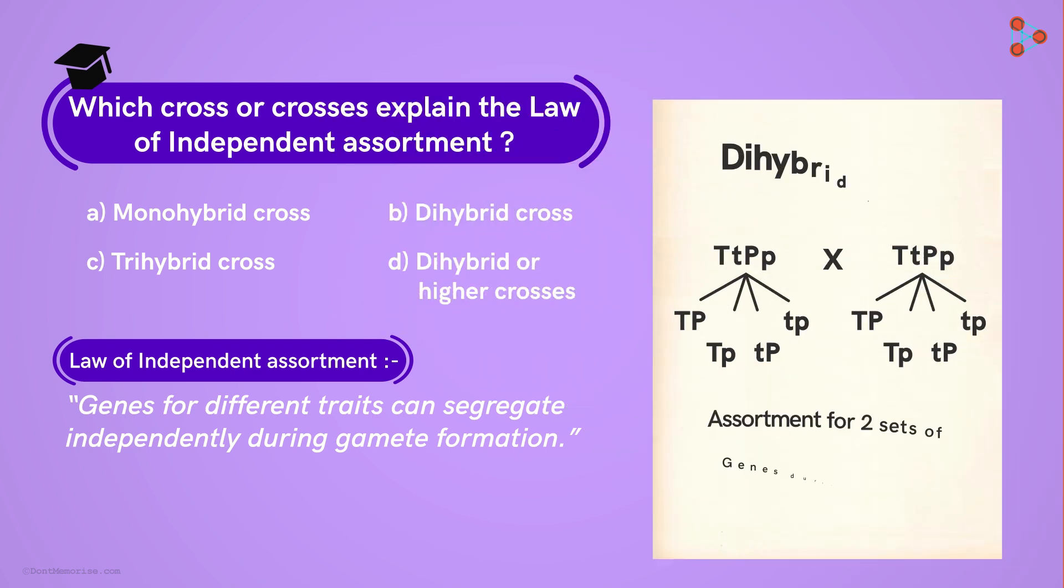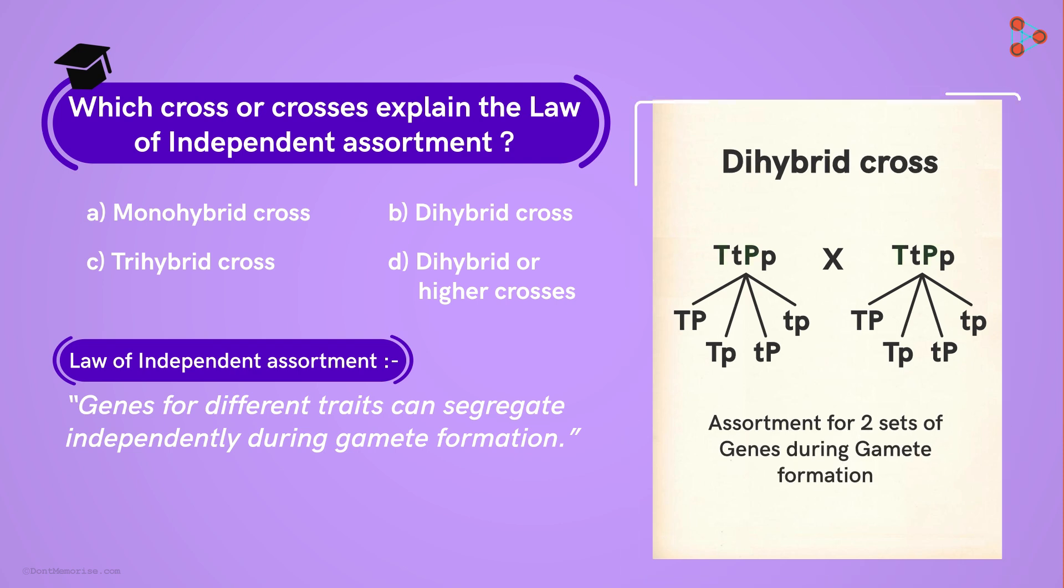However, when there are 2 or more genes involved, as we can see in this case, the dominant and the recessive alleles of the different genes assort independent of each other! That is the reason why we get 4 different combinations at the end! Does this law is best understood when we study dihybrid or higher crosses which involve more characters?